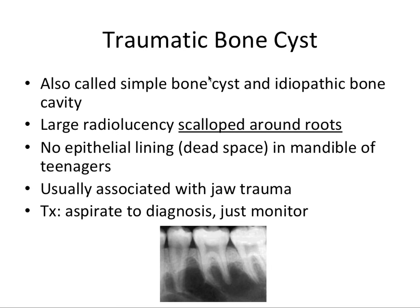Traumatic bone cysts are another favorite of test makers, also called simple bone cysts and idiopathic bone cavity — important synonyms. It's a large radiolucency that scallops around roots — that's probably the most important thing to know. It does not have an epithelial lining, so technically it's a pseudocyst. It's usually in the mandible of teenagers associated with jaw trauma from sports. Treatment is to aspirate first, determine it's fluid-filled with blood, then monitor — there's typically nothing to worry too much about.